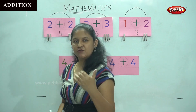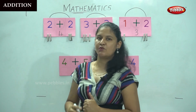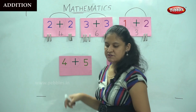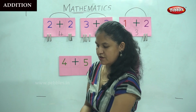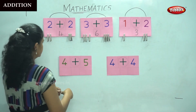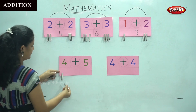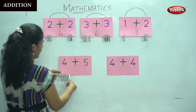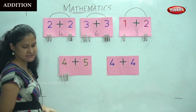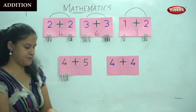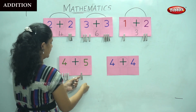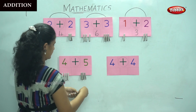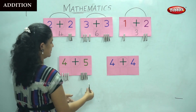Do you like this activity, children? On the next chart I have four plus five. I am going to place four pegs on this side — one, two, three and four — and on the other side I am going to place five pegs — one, two, three, four and five.